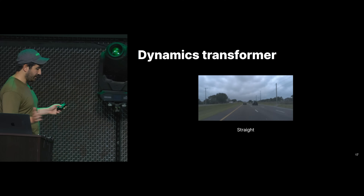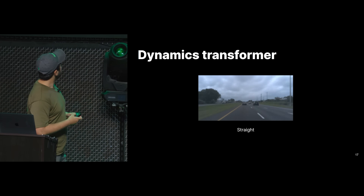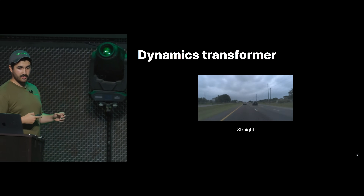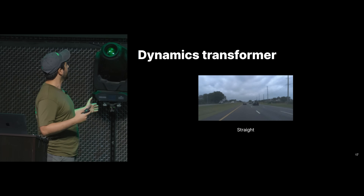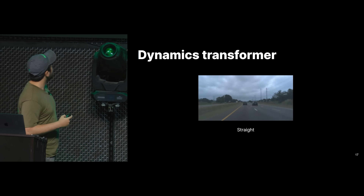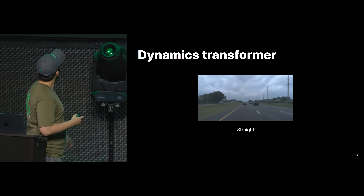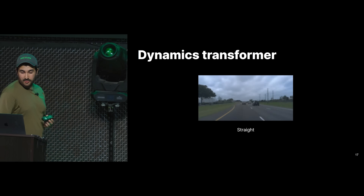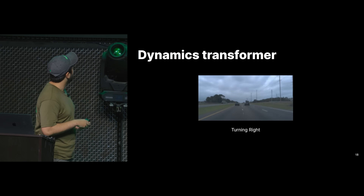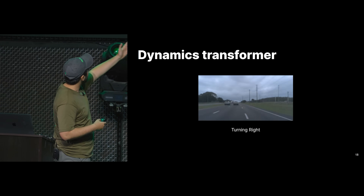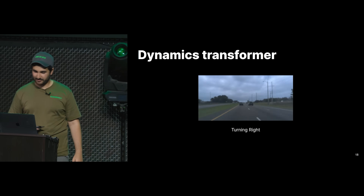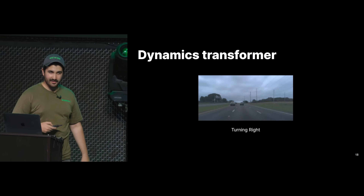We do all this and it works. This is our dynamics model, our simulator. Here we just tell it to drive straight and as you can see, it does a pretty nice highway drive. But we can also ask it to do things like yank the steering wheel to the right — turn right as much as you want — and as you can see, it turns right, changes lanes, even goes out of the road and drives on the grass.